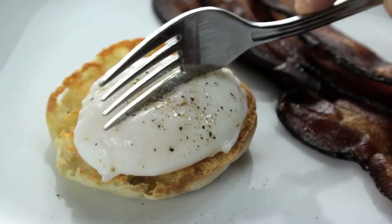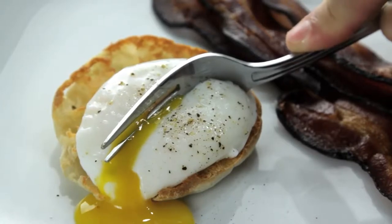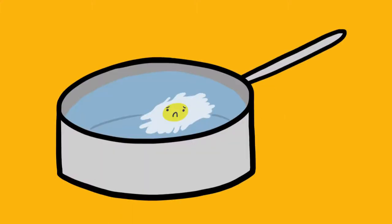The perfect poached egg. Tender whites around a warm liquid yolk that oozes out like gold when you cut into it. They're an essential part of Eggs Benedict. They can turn any salad into a meal or any vegetable into brunch. The problem is they're really tough to make right.